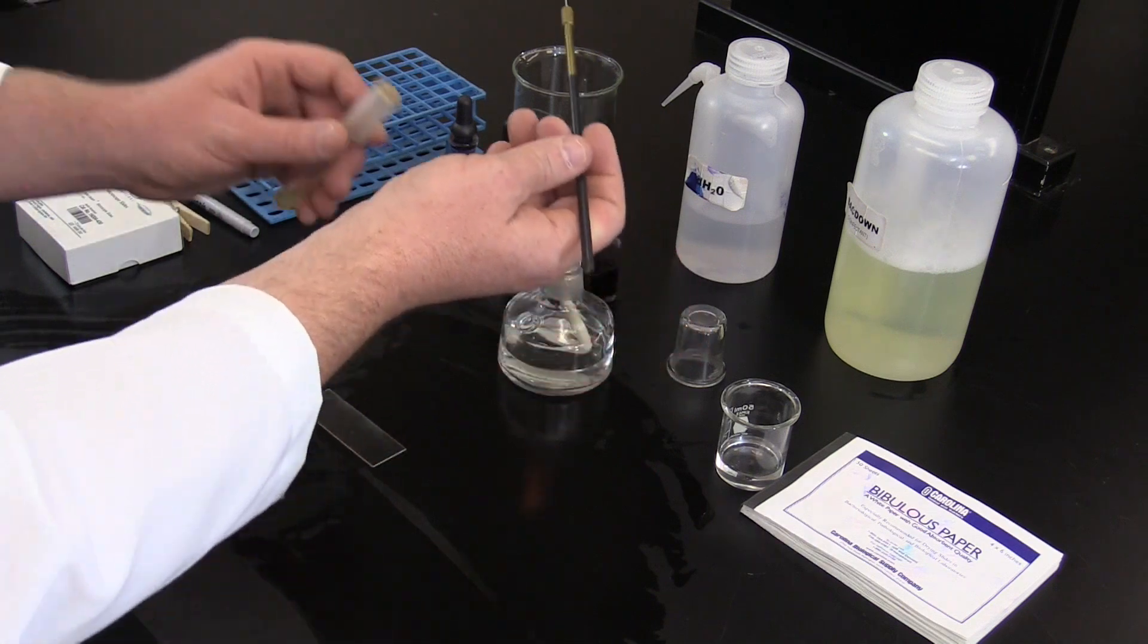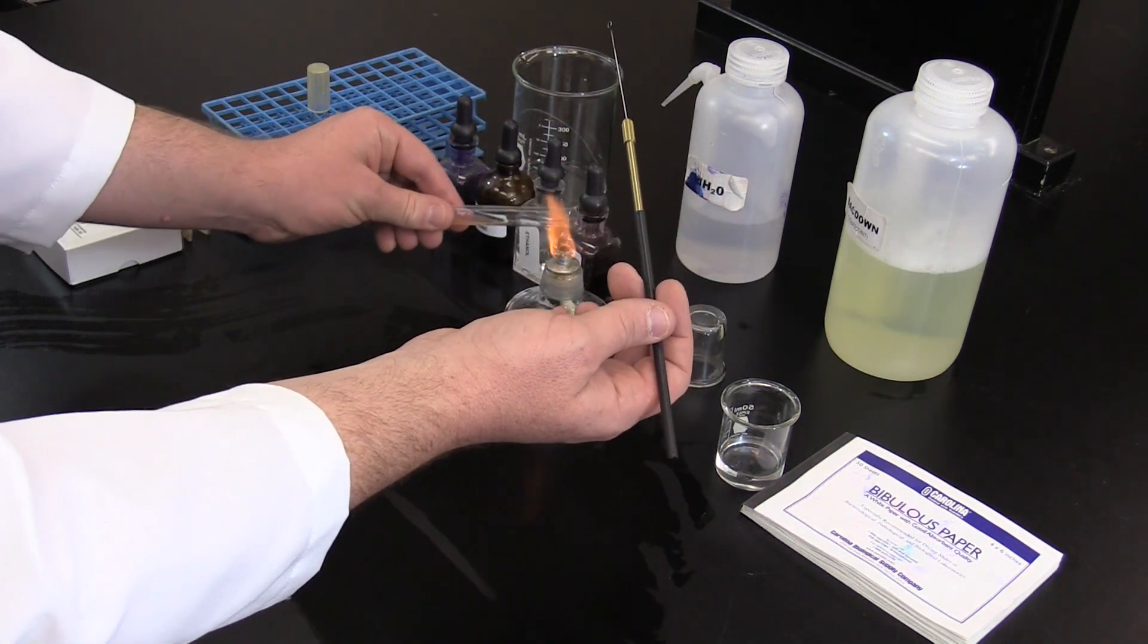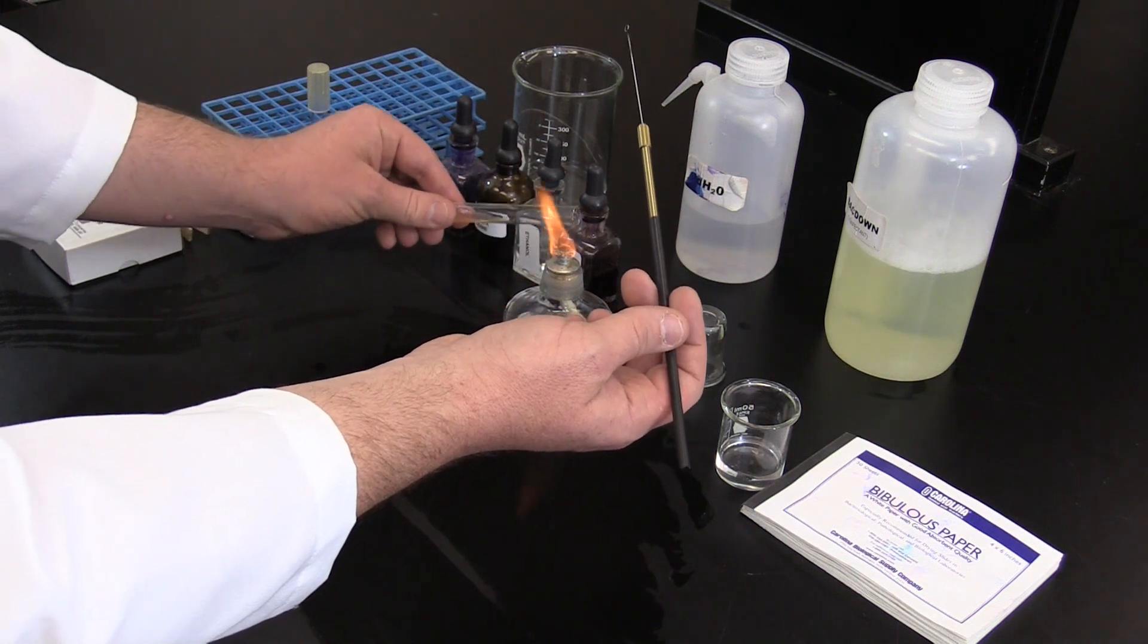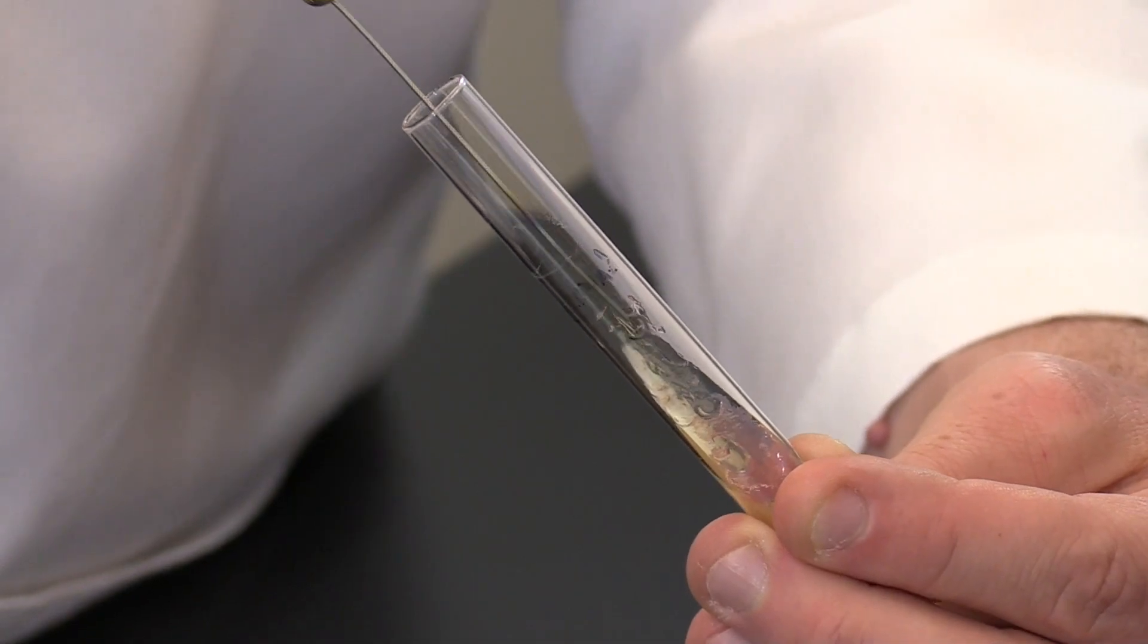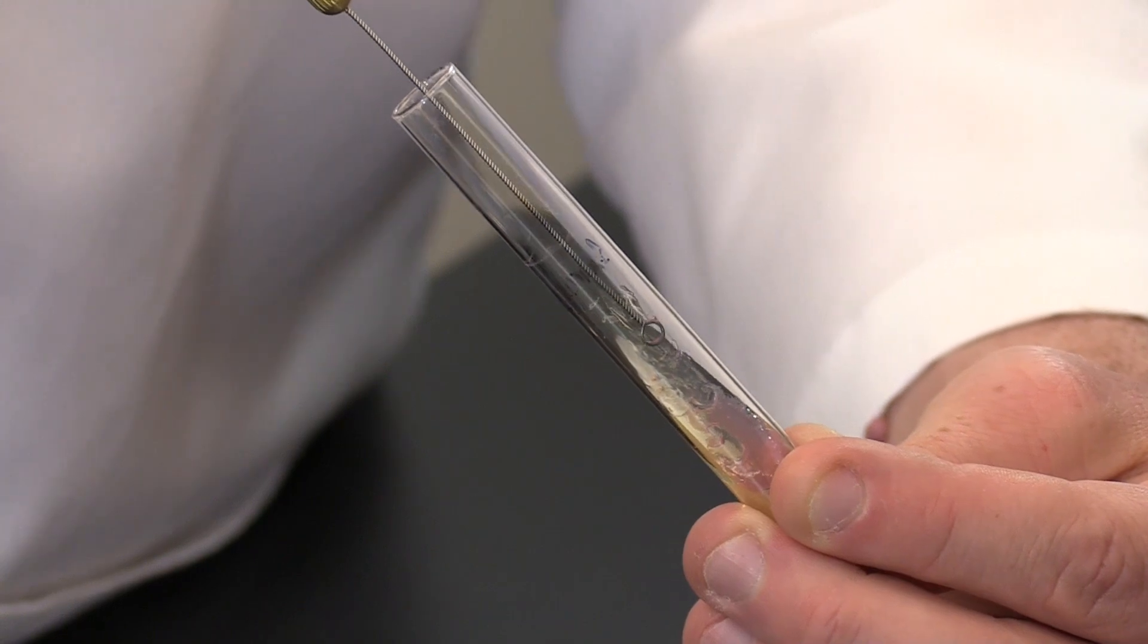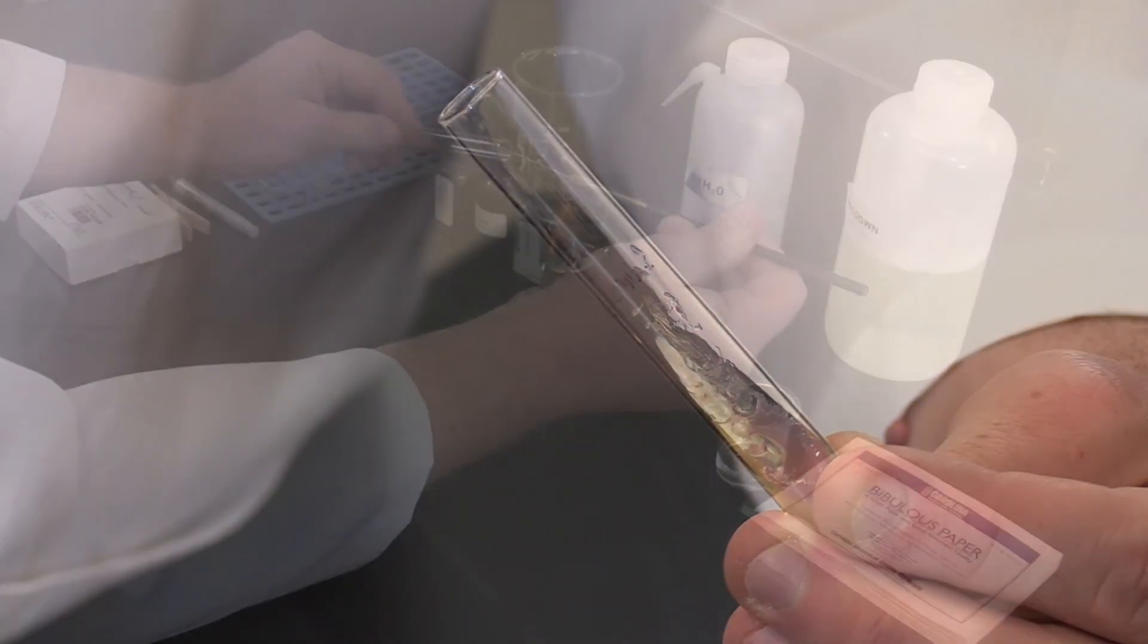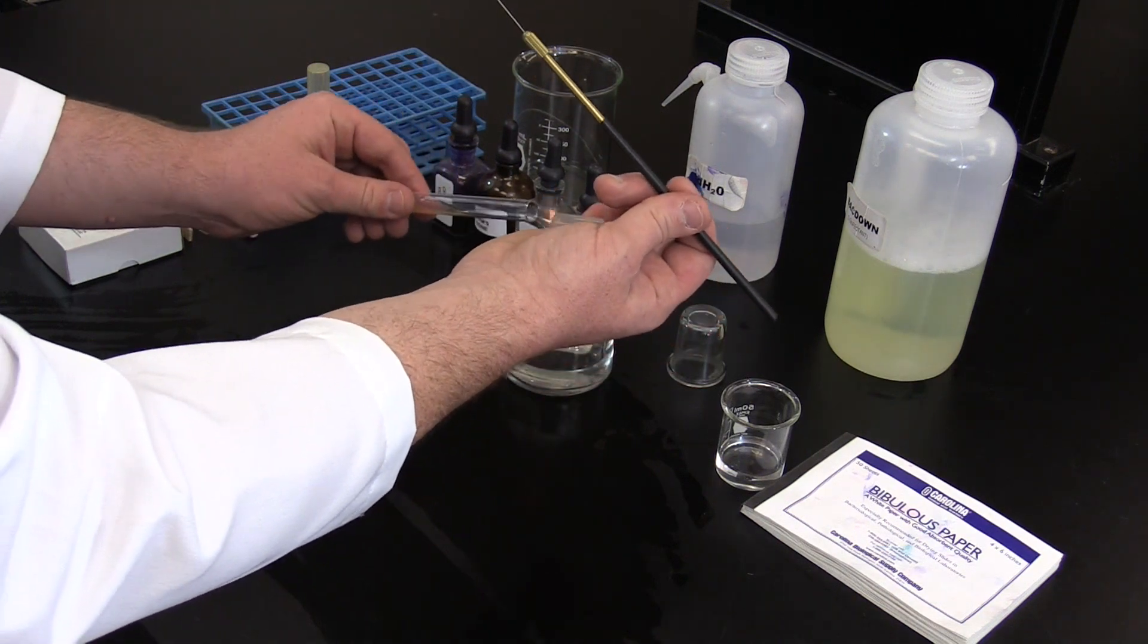Allow the loop to briefly cool. Pick up the glass tube, remove the lid and gently flame sterilize the opening. Insert the loop into the tube without touching the sides and gather a small amount of bacteria from the slant. After removing the loop, gently flame sterilize the opening of the glass tube and return the cap.